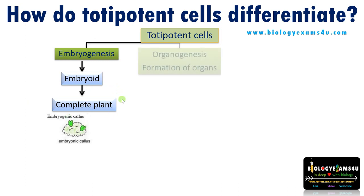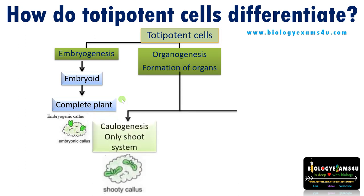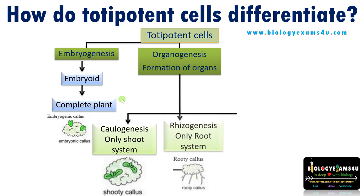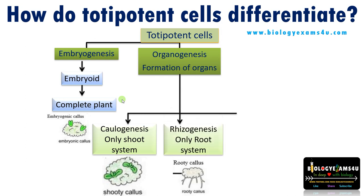The second option is organogenesis — the formation of organs, that is shooting and rooting. Totipotent cells can directly give rise to only shoot formation, which is called caulogenesis, or only root formation, which is called rhizogenesis.